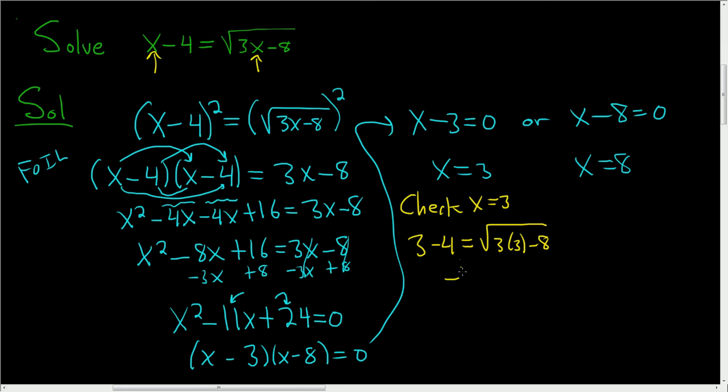So this will be 3 minus 4 equals square root of 3 times 3 minus 8. 3 minus 4 is negative 1. And then here we get the square root of 9 minus 8, which is 1. So negative 1 is equal to 1. No, that's not true. So 3 does not work.